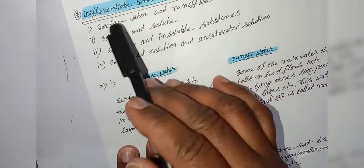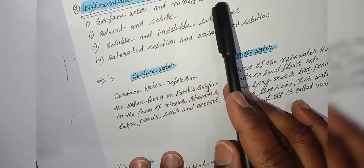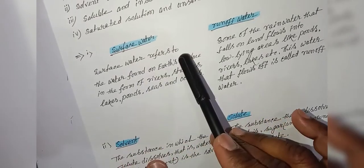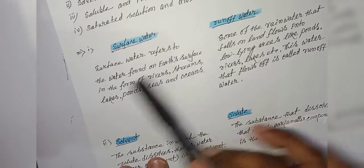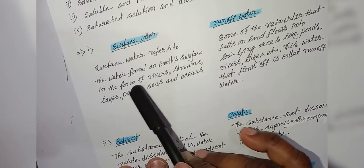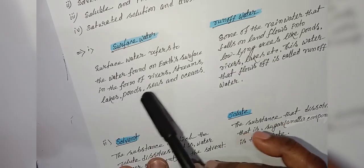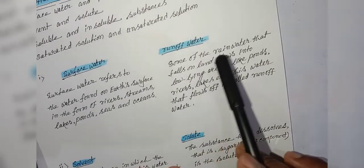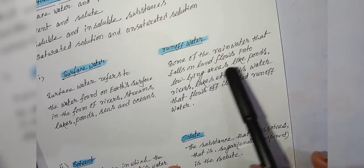Difference between surface water and runoff water. Surface water refers to the water found on Earth's surface in the form of rivers, streams, lakes, ponds, seas, and oceans. The water that flows over the surface is called runoff water.